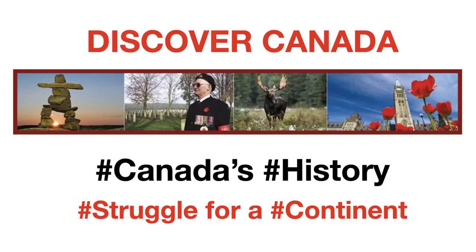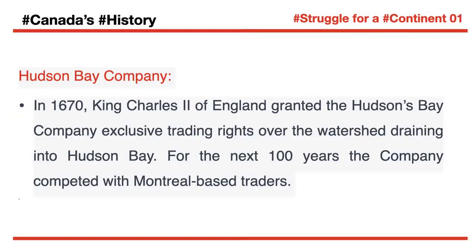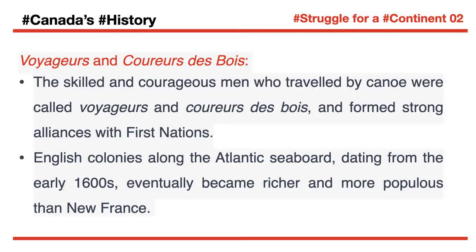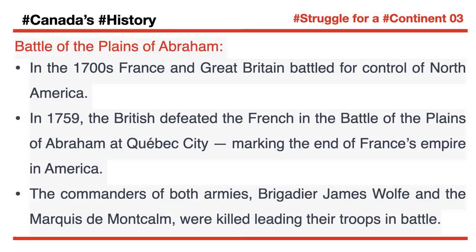In 1670, King Charles II of England granted the Hudson's Bay Company exclusive trading rights over the watershed draining into Hudson Bay. For the next 100 years, the company competed with Montreal-based traders. The skilled and courageous men who traveled by canoe were called Voyageurs and Coureurs de Bois, and formed strong alliances with First Nations. In the 1700s, France and Great Britain battled for control of North America. In 1759, the British defeated the French in the Battle of the Plains of Abraham at Quebec City, marking the end of France's empire in America.